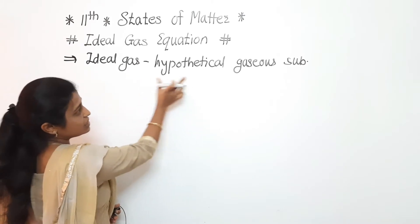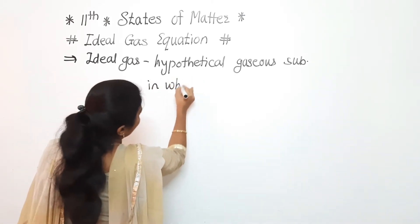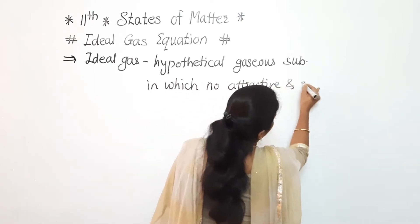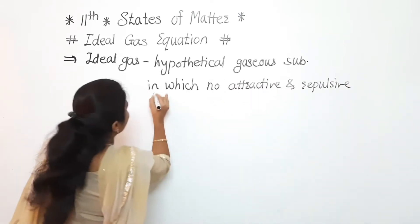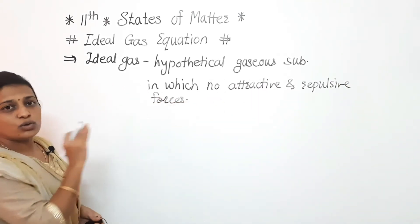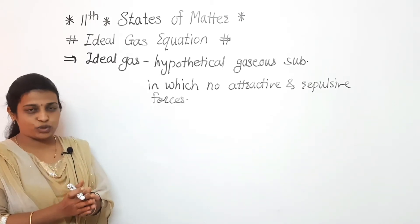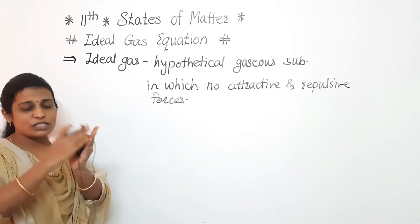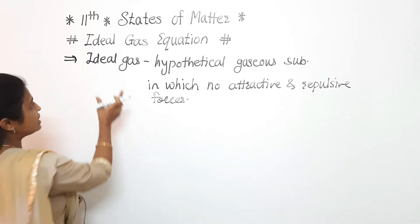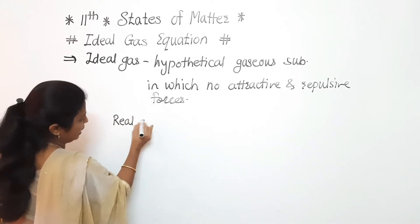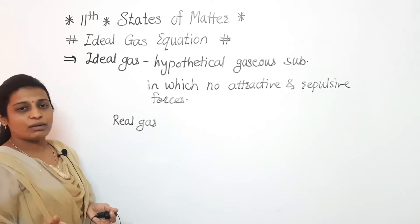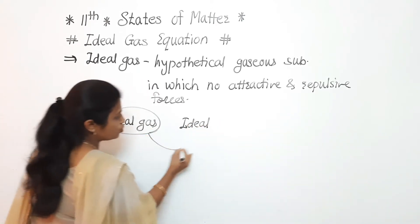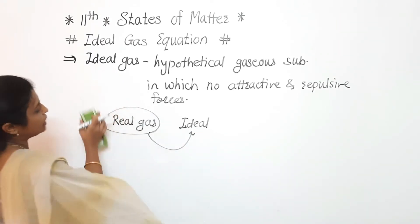So we can say that an ideal gas is a hypothetical gaseous substance with no attractive and repulsive forces. In reality, no such gas exists. But for comparison and conceptual purposes, we consider it — so that we can compare properties of real gases with the ideal gas.